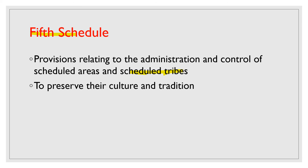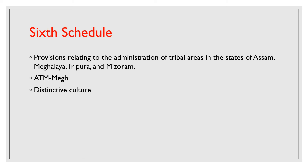There are four states not included in the fifth schedule. Using the trick from the previous video — ATM Make — these are Assam, Tripura, Mizoram and Meghalaya. Provisions relating to the administration of tribal areas in Assam, Meghalaya, Tripura and Mizoram are given in the sixth schedule. This is because the tribal areas in these states have a very distinctive culture, and to give them a special status separate from the rest of the tribal areas, they have been included in the sixth schedule.